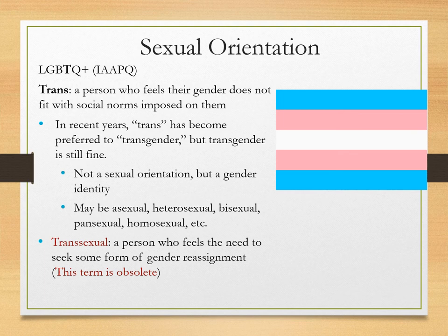Trans people — transgender is still an okay term for reference — a trans person is somebody who feels that their gender does not fit with the social norms imposed on them. Being trans is not a sexual orientation, but a gender identity. Being asexual, heterosexual, bisexual, pansexual, or homosexual are sexual orientations, while being transgender is about the relationship between your brain and your body.